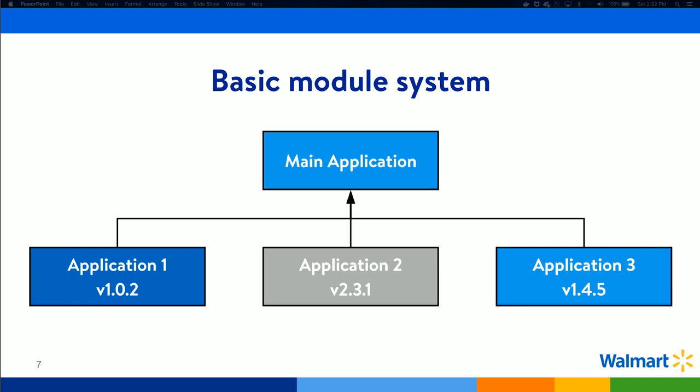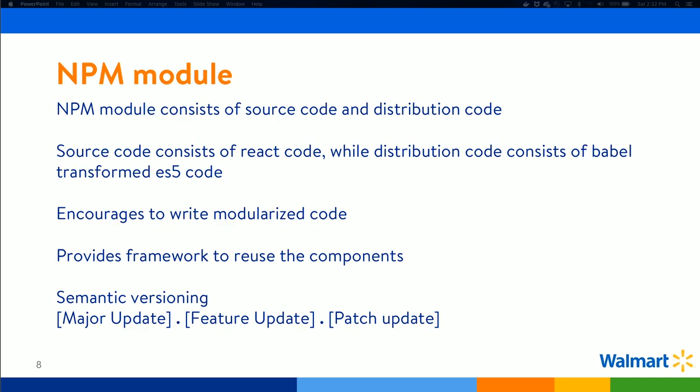One obvious question you'd have is: why go with this approach of building npm modules for your application? One benefit is that npm supports versioning by default — semantic versioning — where you have the major update, the feature update, and the patch update. If you make a breaking change, you update the major number; for a feature update, the middle one; and for a bug fix, the patch version. So versioning capability is built in.